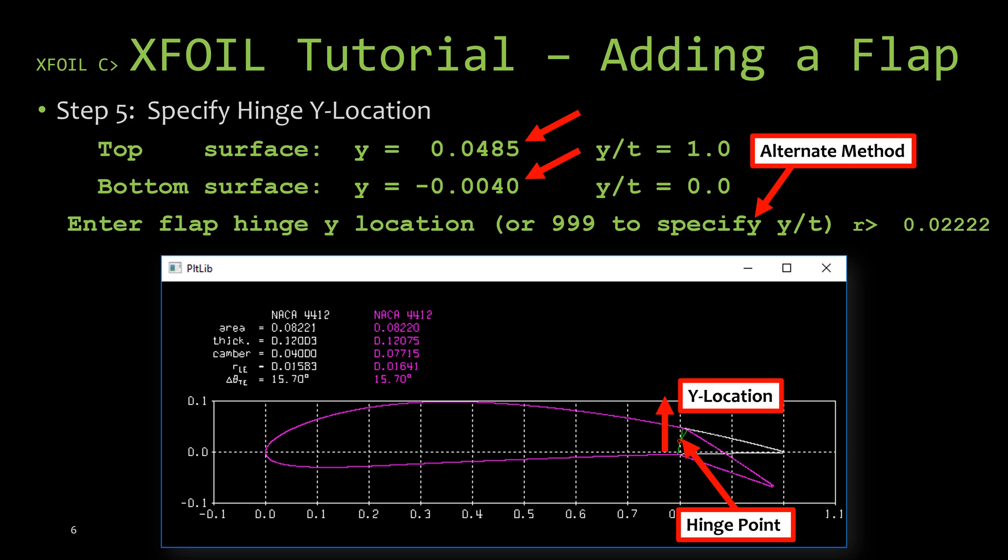The next parameter that the flap command is going to want to know is the y-location of the pivot point. Now there are two methods to do this. Along with the command prompt asking you where the y-location is, XFOIL also gives you some information about the airfoil at the x-location that you specified in the previous step. You'll see here it says top surface and bottom surface. This is just letting you know that at the x-location you specified, the top surface of the airfoil is at a y-value of 0.0485 and the bottom surface is at a y-location of -0.0040.